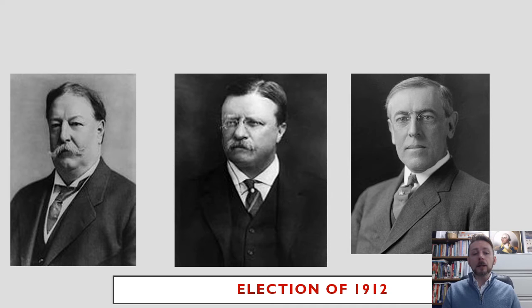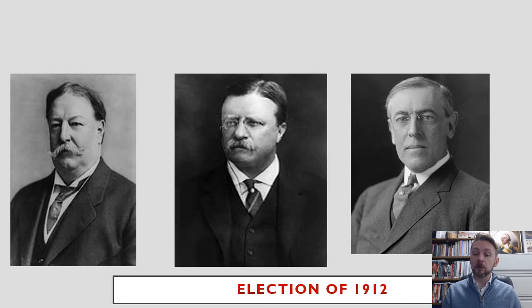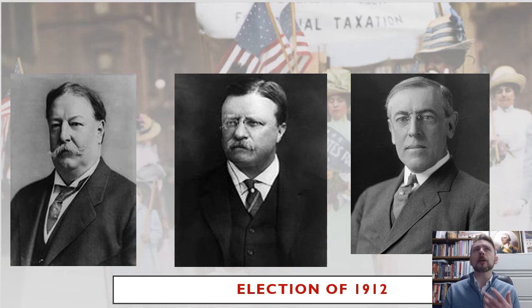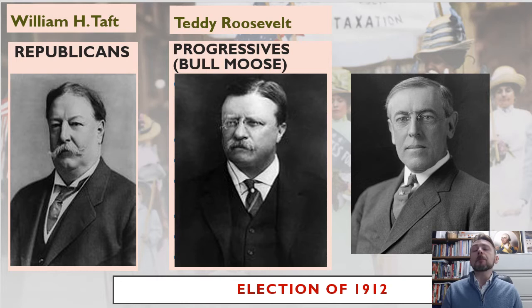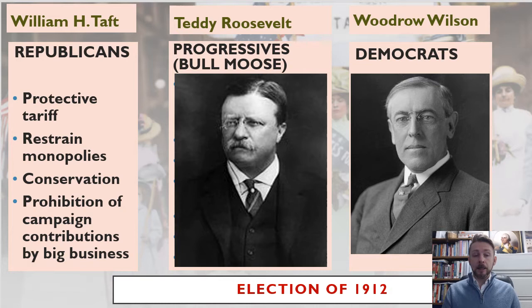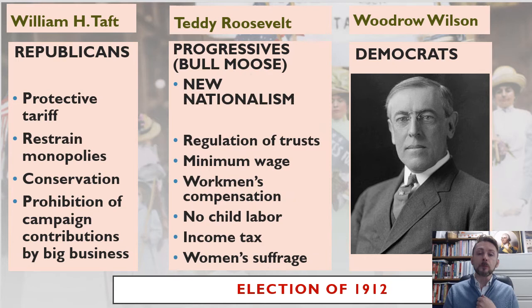In the election of 1912, the top three candidates are essentially two flavors of Republican and then a Democrat, which splits the Republican vote and throws it over to the Democrats. The platforms of the candidates are pretty similar, though with some minor differences. Taft: protected tariff, restrained monopolies, conservation of resources, prohibition of campaign contributions by big business — which is of course a big fight of our own time thanks to the Supreme Court's Citizens United decision.